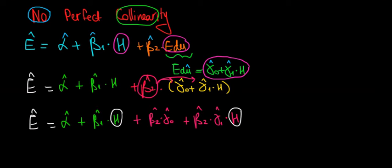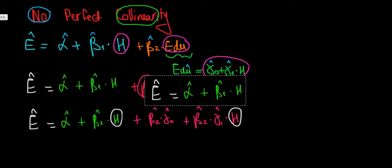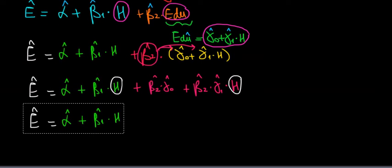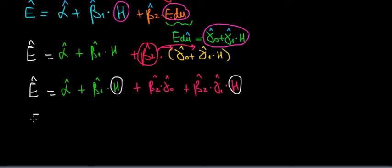So we will have earnings equals to the constant alpha, but we're gonna take height as a common factor. So we put height in front of the bracket.